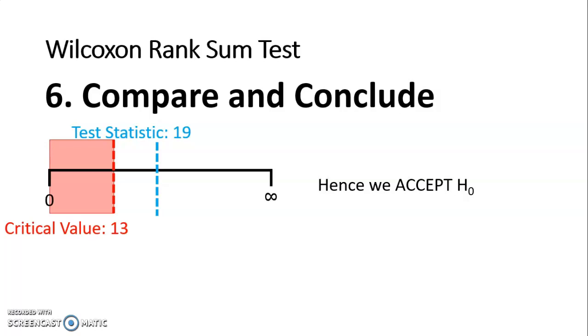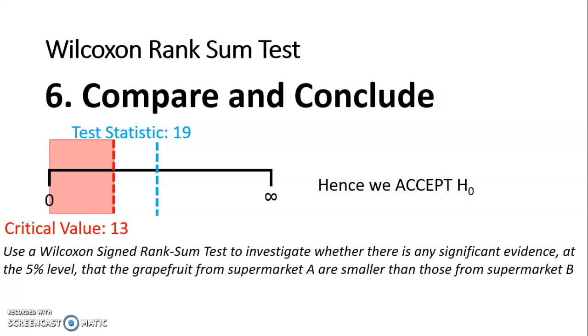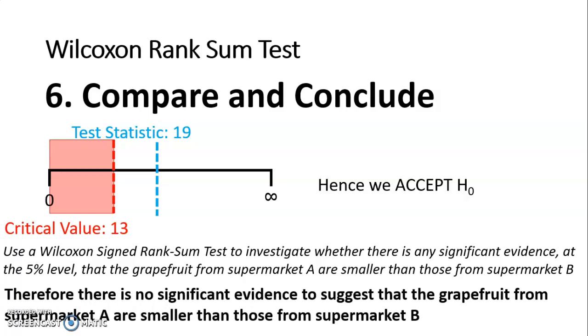So to conclude in context, I need to refer back to what the question was actually asking me. And it asked me to investigate whether there is any significant evidence that grapefruit from supermarket A are smaller than those from supermarket B. Our conclusion is that we have accepted H0. And our H0 was that eta A equals eta B. They are the same. There is no difference. So I am not agreeing with this statement. So my conclusion will be, therefore, there is no significant evidence to suggest that the grapefruit from supermarket A are smaller than those from supermarket B.